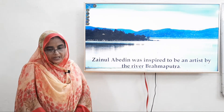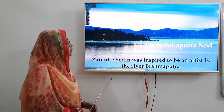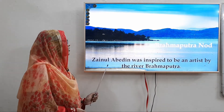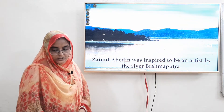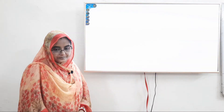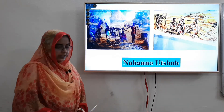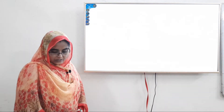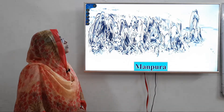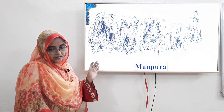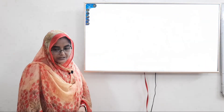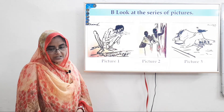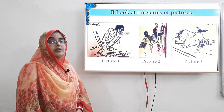This is the Brahmaputra river. We see in the text that Jainul Abedin was inspired to become an artist by the river Brahmaputra — it is clear that the river Brahmaputra had a very great impact on him. Here are pictures of Jainul Abedin's Nabanno exhibition of 1969 and also Manpura — the picture that depicts how Bangladesh went from abundance to poverty. Some other pictures also have special meaning.